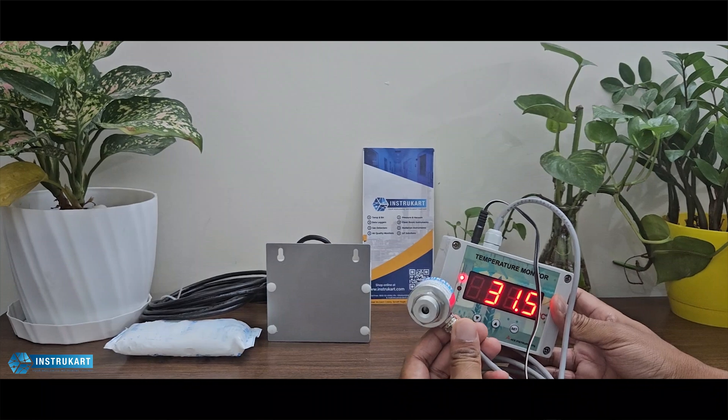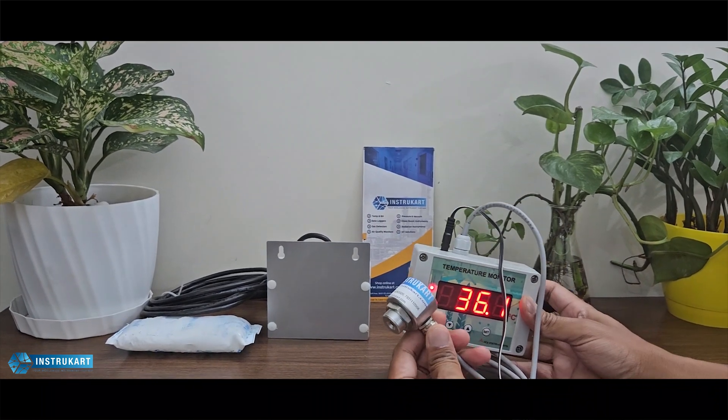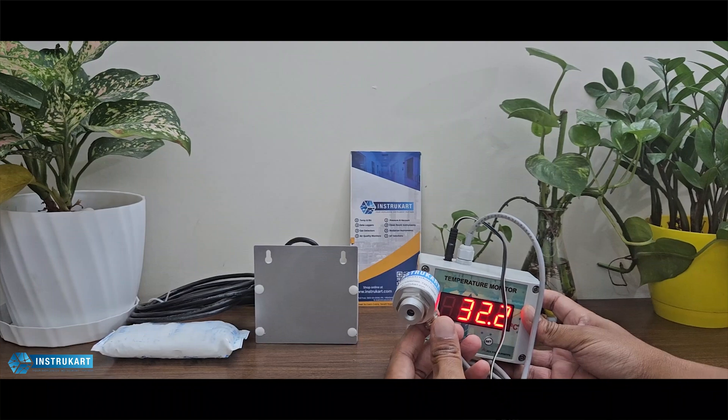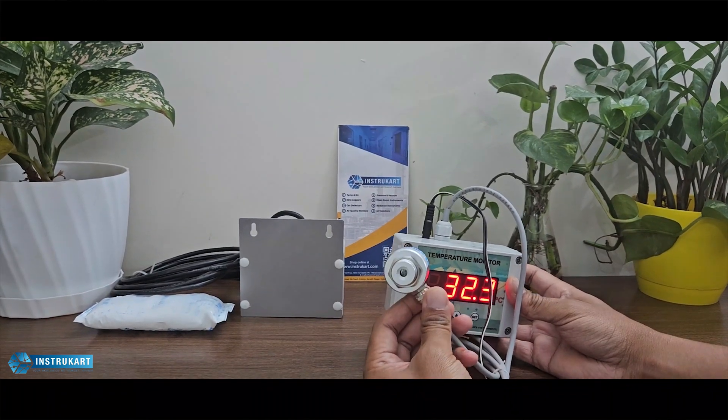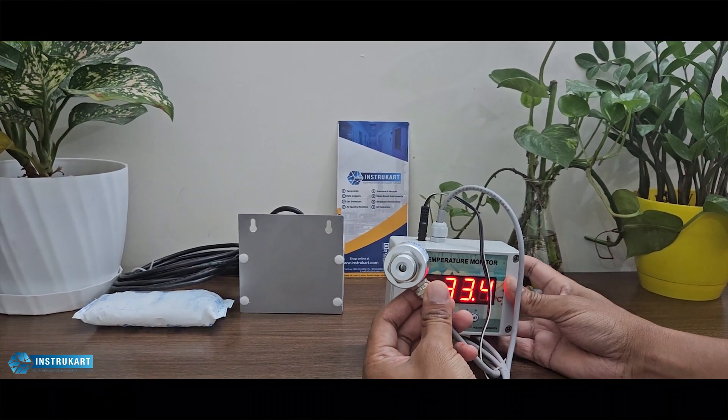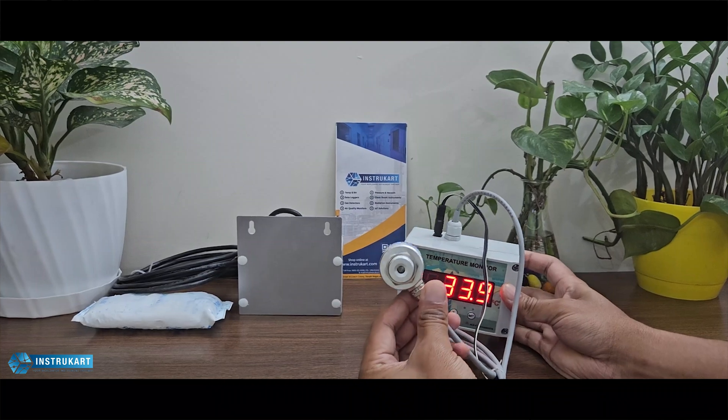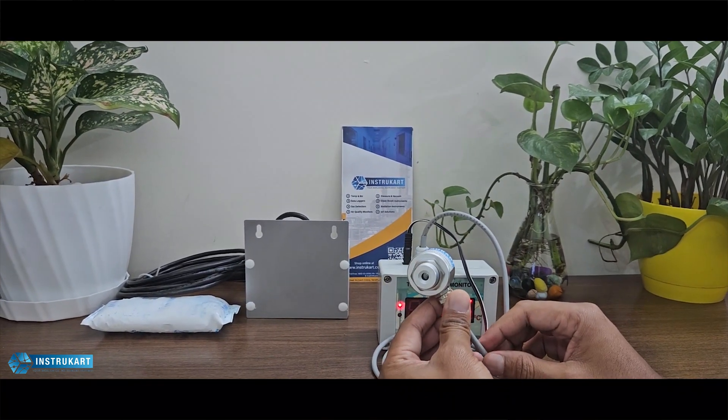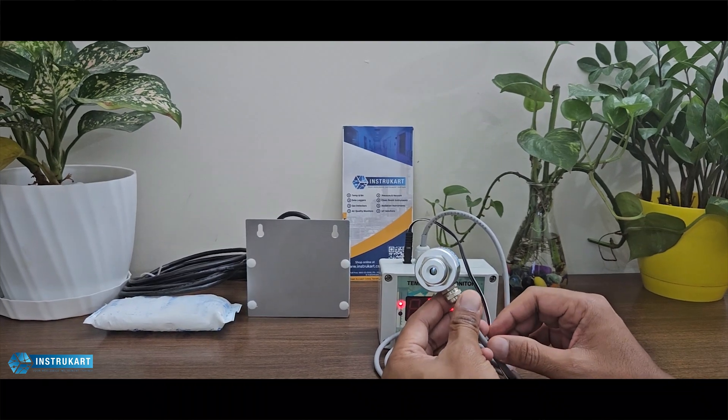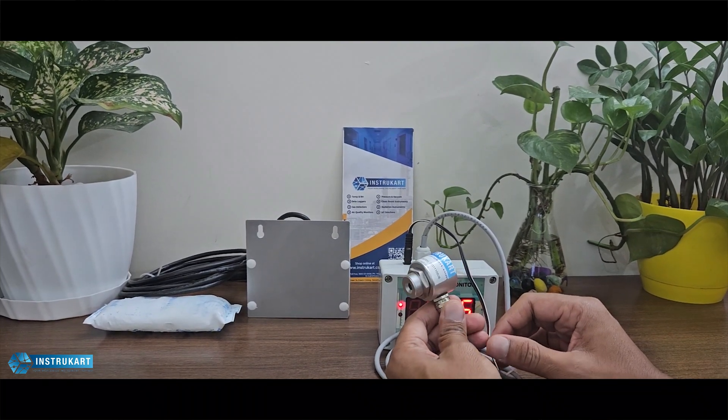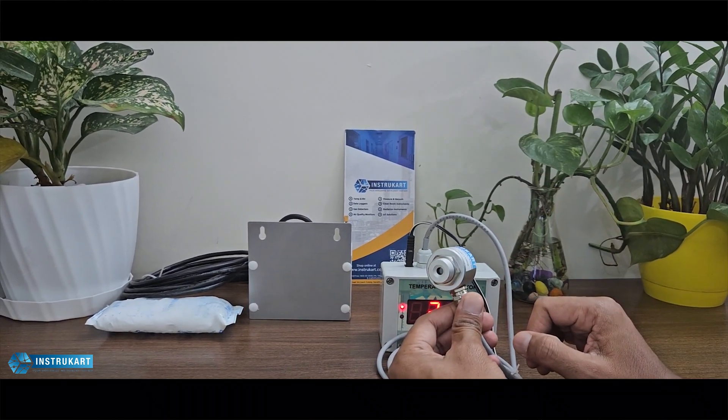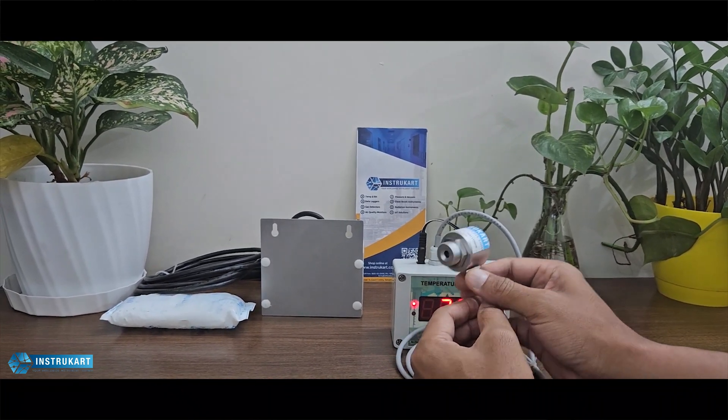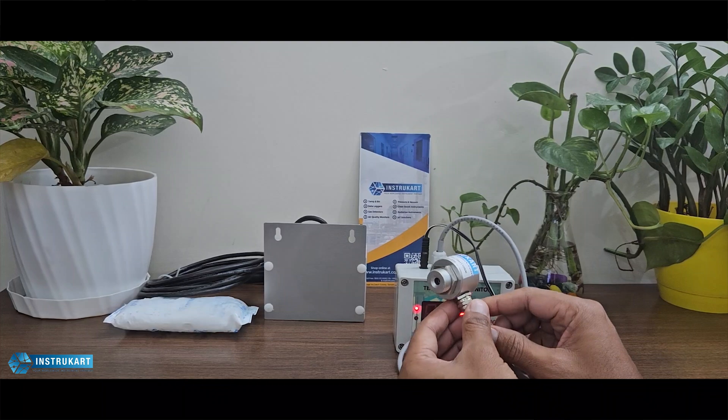This IR sensor or non-contact temperature transmitter has got a temperature range of 0 to 500 degrees. It has got a response time of 150 milliseconds, which means that it can be used in applications where the object is moving, similar to an escalator or any other application where the subject does not need to touch this temperature sensor.